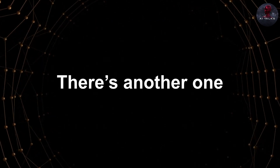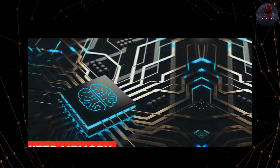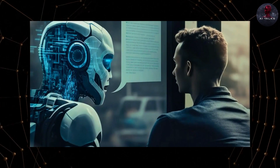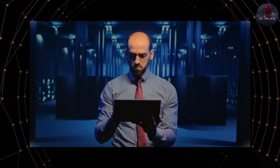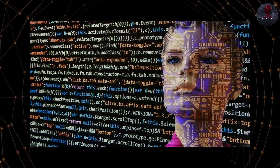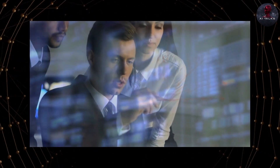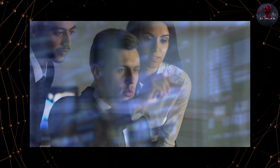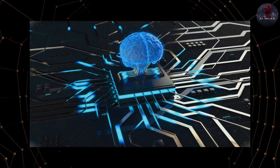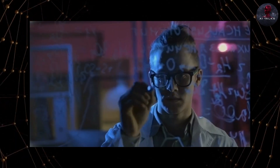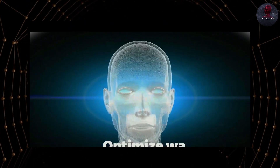Deep Blue's success was based on its ability to evaluate chess positions using predefined rules and an extensive database of moves. There's another type called limited memory AI. Limited memory AI, also known as narrow AI with limited memory, represents a level of artificial intelligence that falls between basic reactive machines and more advanced artificial general intelligence, AGI. Limited memory AI systems are designed to perform specific tasks or functions, and they have the ability to learn and adapt to some extent based on historical data or past experiences, but their memory and learning capability are constrained compared to AGI.